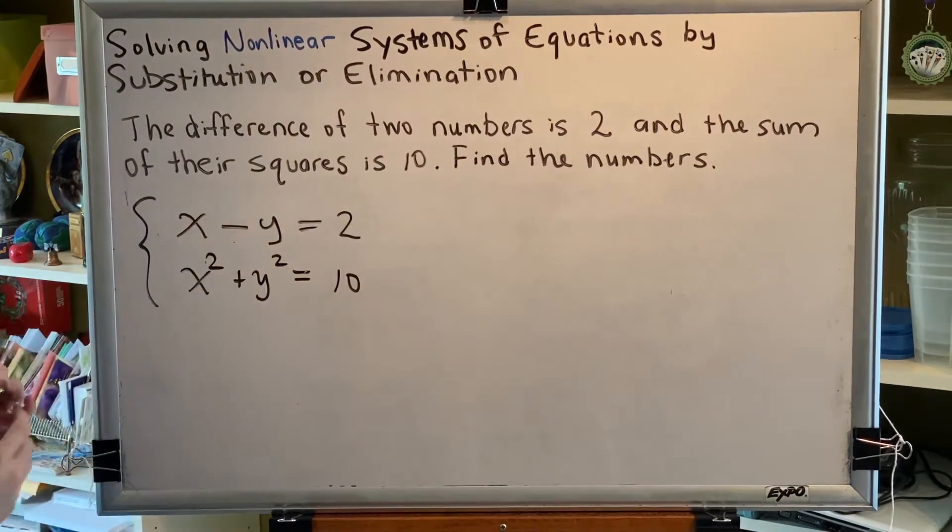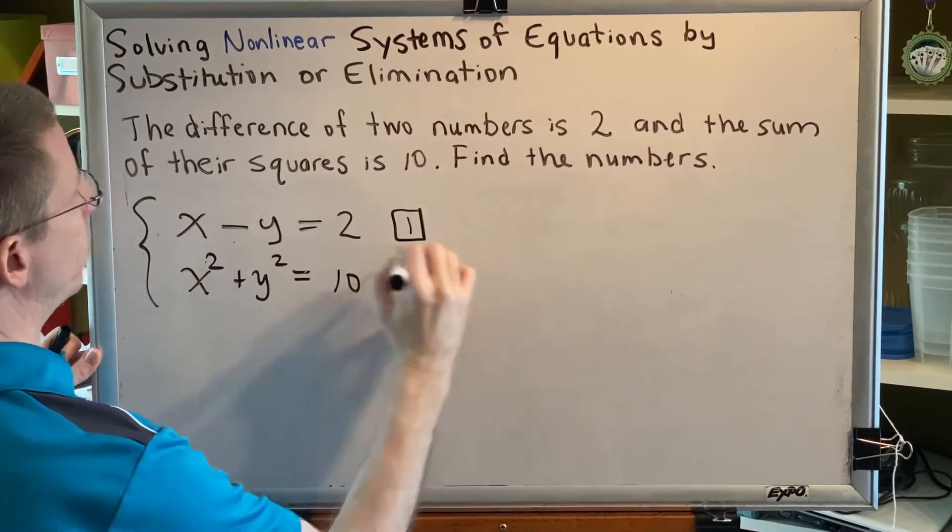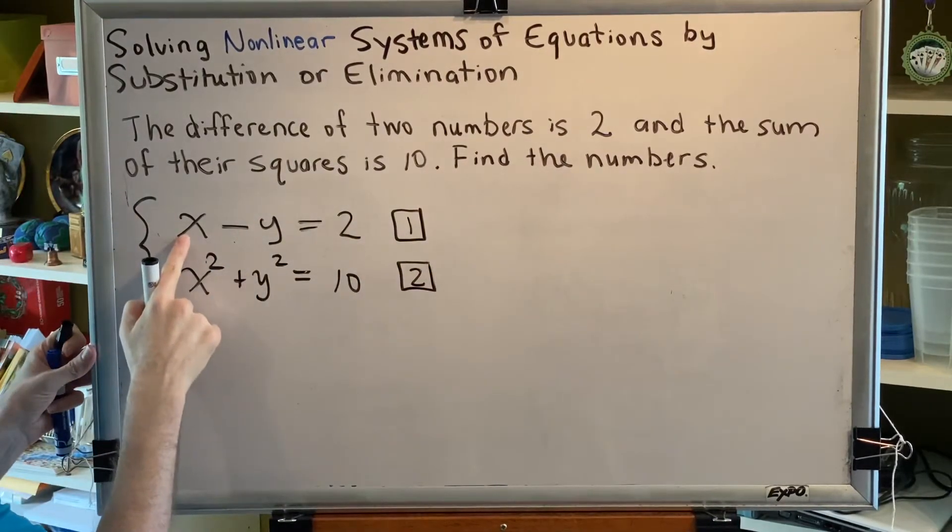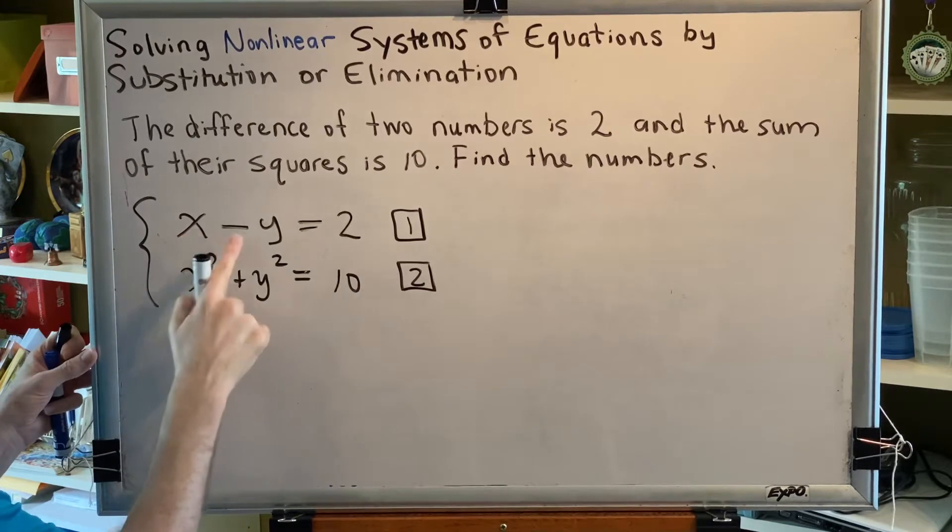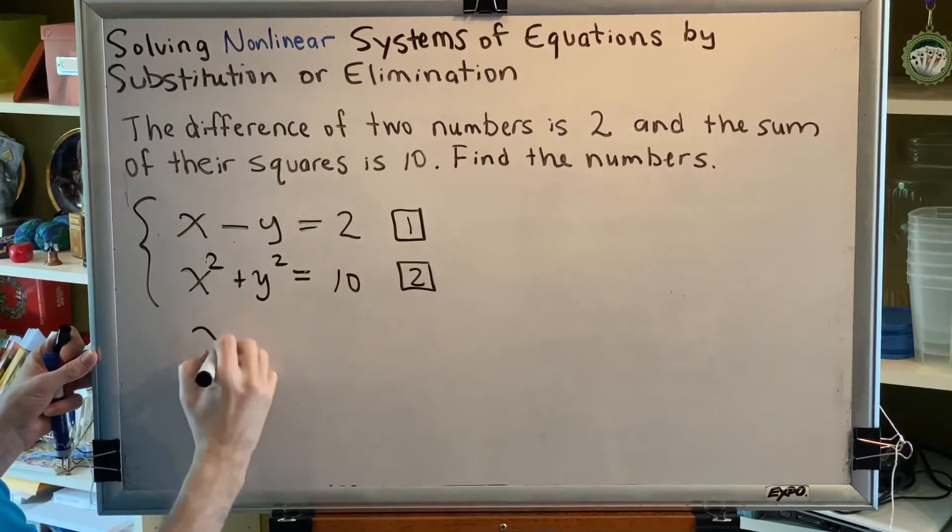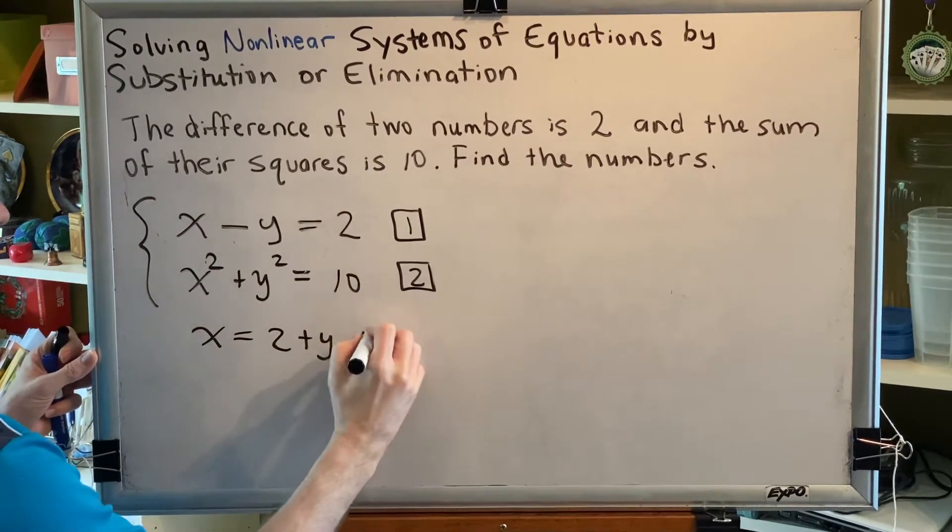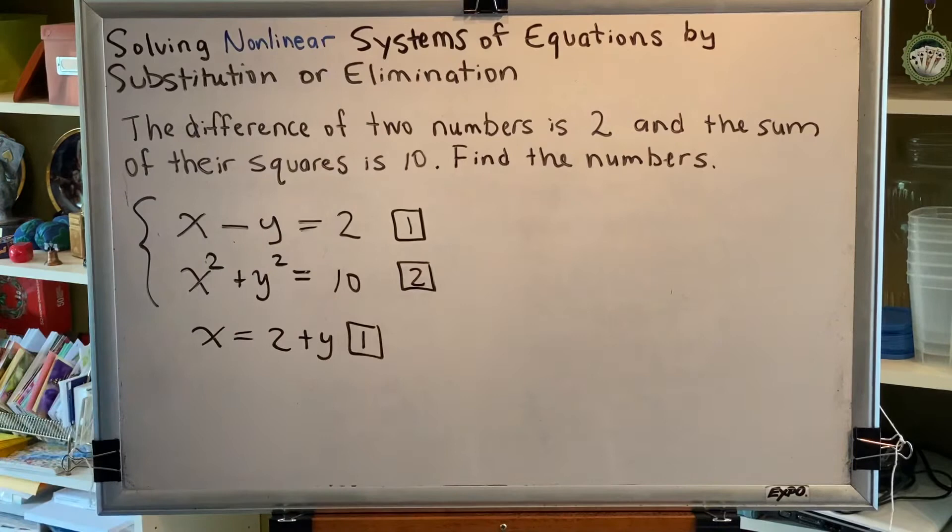So let's label our equations and solve for the x. This is equation 1. This is equation 2. And we'll solve for x in equation 1. The way we'll do that is by adding y to both sides. We move the y to the other side where it changes signs. And we get x equals 2 plus y. This is still equation 1. We just made it look different.